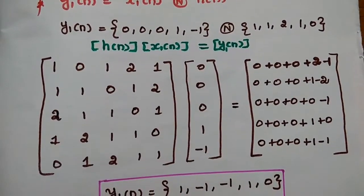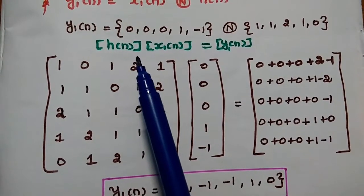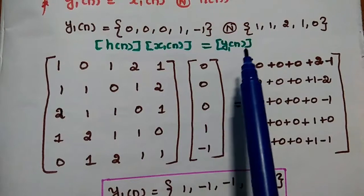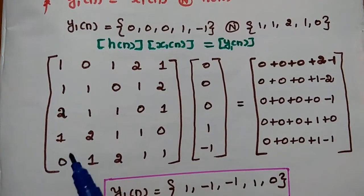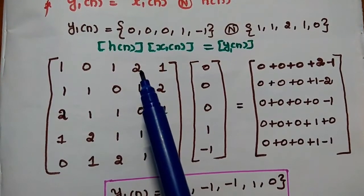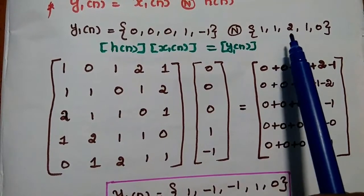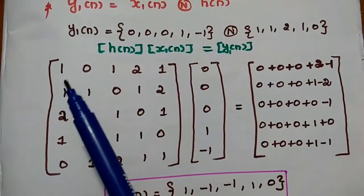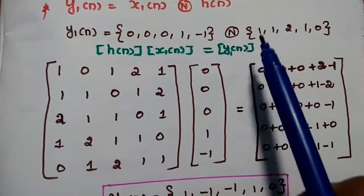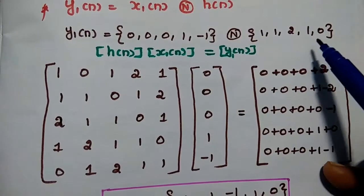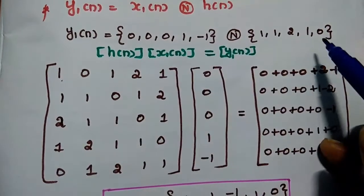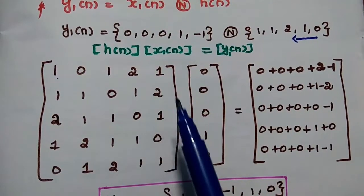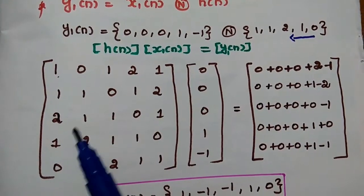We are going to use the matrix multiplication method. For that, we take h(n) in matrix form as an N×N circulant matrix multiplied by the column vector x1(n) to get y1(n). The first row of the matrix is the first value of h(n) as-is, and the remaining values in reverse order: {1, 0, 1, 2, 1}. Each subsequent row is a circular shift of the previous. This h(n) matrix is standard and remains the same for all output sequences — only x1(n), x2(n), etc. change.